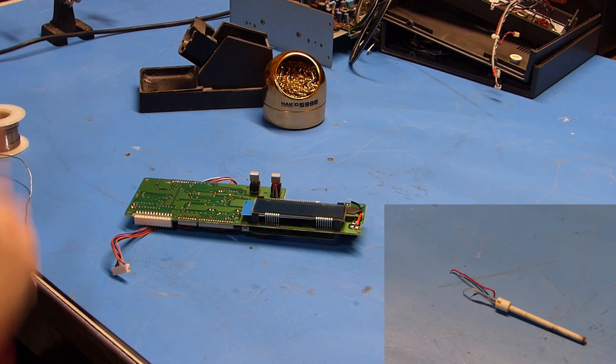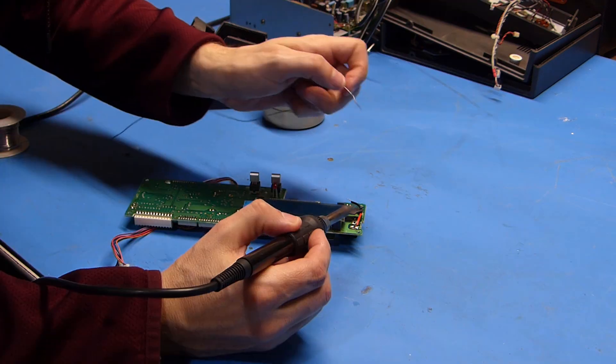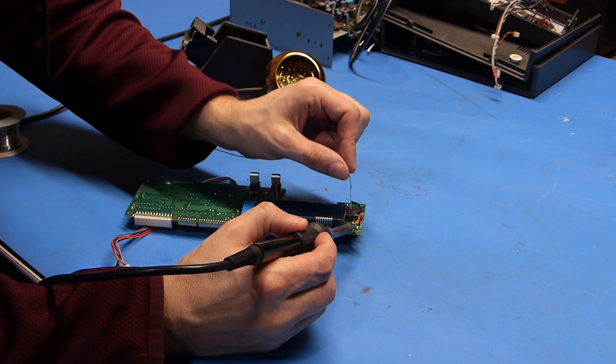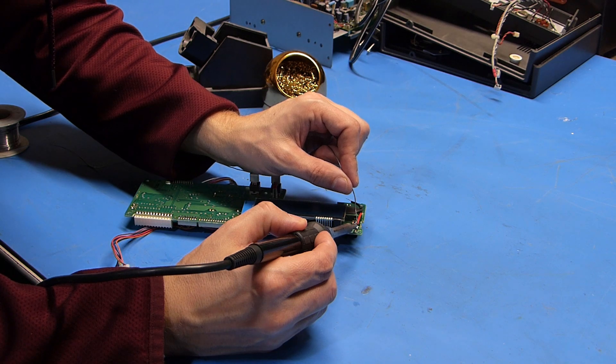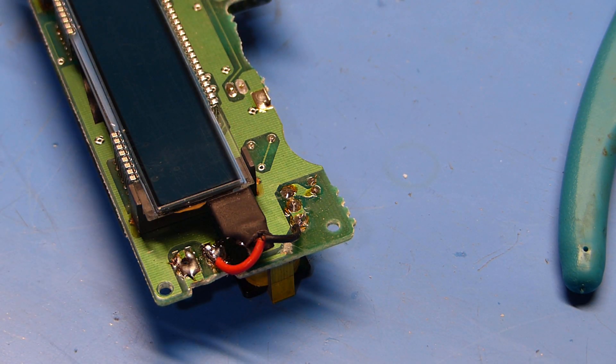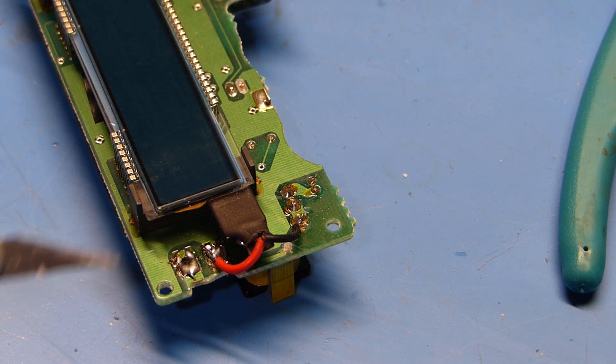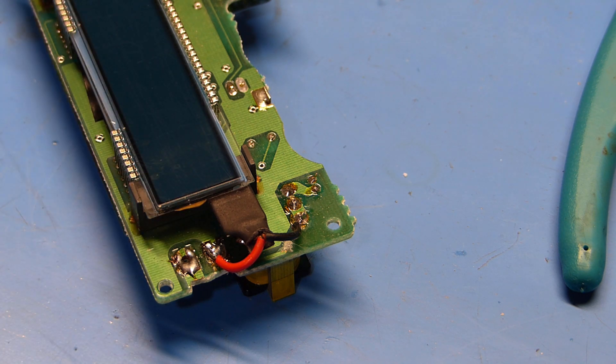So I went to solder this and I ended up having to replace the heating element in my iron but I think we're good to go now. So what I'll do first is tin these wires just to make them a little easier to solder. So as you can see I've got this all soldered in. Probably won't win any awards for IPC J standard soldering techniques but it ought to work. So I think it's time to get everything reassembled and see if this is working now.